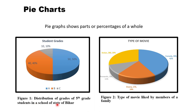Figure one represents the distribution of grades of fifth grade students in a school in the state of Bihar. This pie chart shows that 50 percent of students received A grade, 40 percent of students scored B grade, and only 10 percent of students received C grade.